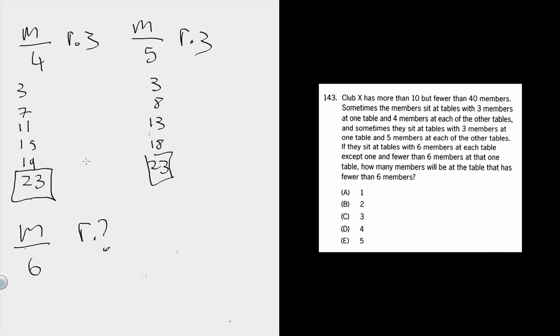So m must be 23. The fast way of doing this is to take the least common multiple of the things you're dividing by and add the remainder.